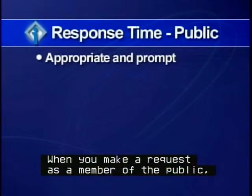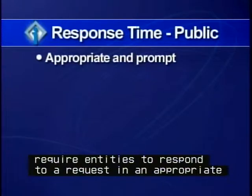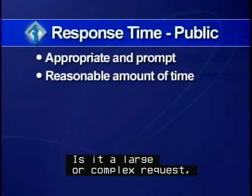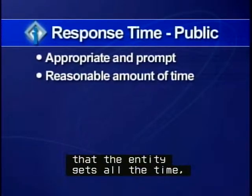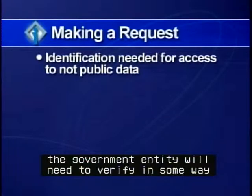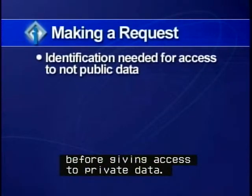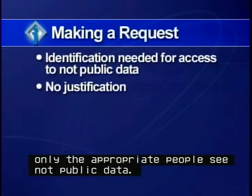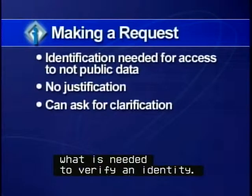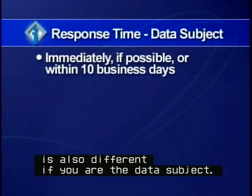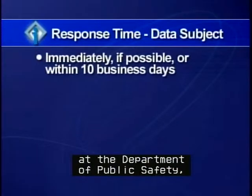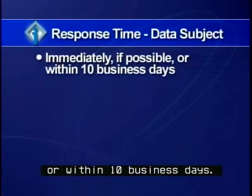When you make a request as a member of the public, the Data Practices Act and its rules require entities to respond in an appropriate and prompt manner and within a reasonable amount of time. A reasonable amount of time really depends on the request — whether it is large or complex, or a simple request the entity gets all the time, like for copies of meeting minutes or legislative reports. If you make a request as a data subject, the government entity will need to verify that you are who you say you are before giving access to private data. An entity has the responsibility to make sure only the appropriate people see not-public data. The access procedures for data subjects should detail what is needed to verify an identity. The response time is also different for data subjects — for example, a request for a driving record at the Department of Public Safety must be responded to immediately, if possible, or within 10 business days.